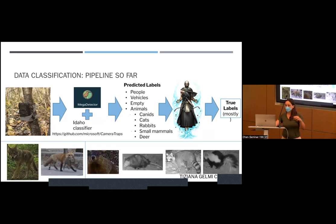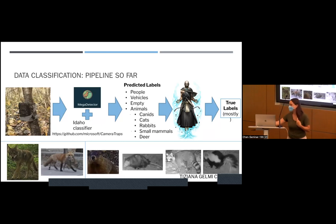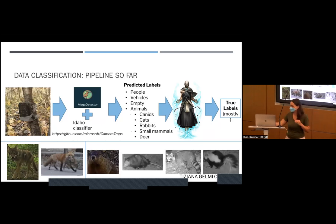These predicted labels — the pictures with the predicted labels — go through the oracle, which I like as a name, and it's just people. Then we put in true labels, mostly true labels. That's the workflow so far.